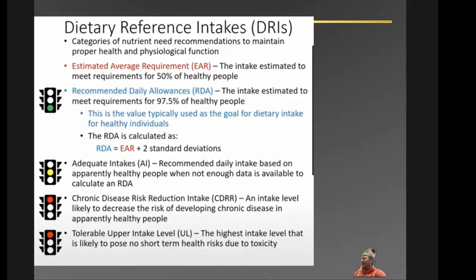In my college health class we had a behavioral change assignment — drinking water was one of the options. I tried to drink half my body weight in ounces per day: at about 200 pounds, I was trying to drink 100 ounces, roughly four Nalgene bottles. All I remember is having to use the bathroom constantly. Later I figured out that when I get dehydrated, I get migraines, so I have to drink more water than I thought.